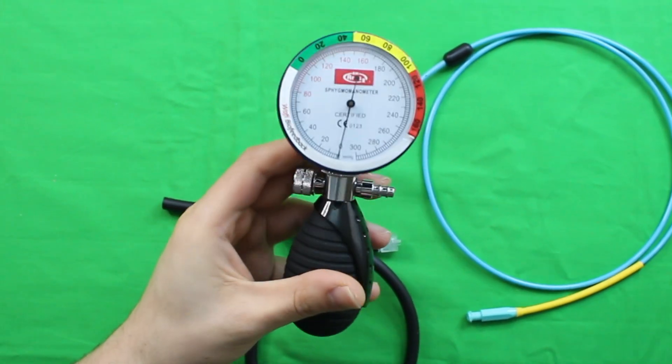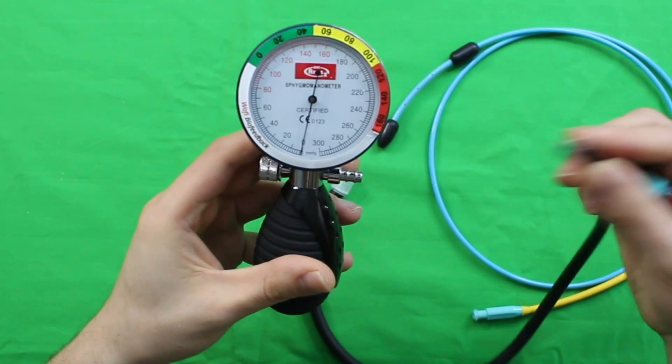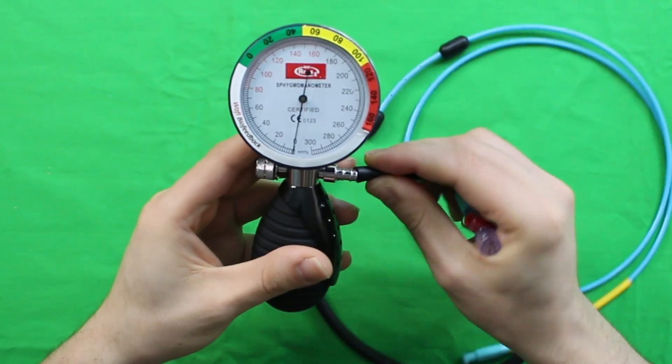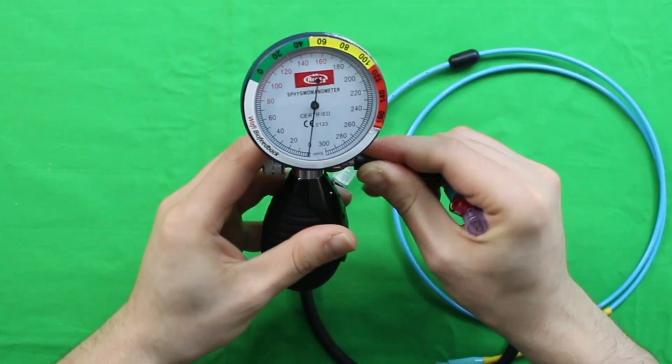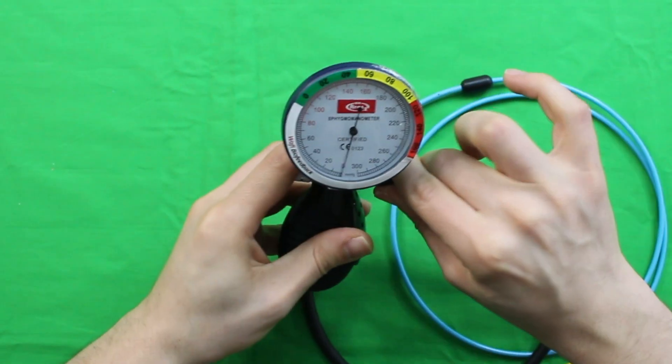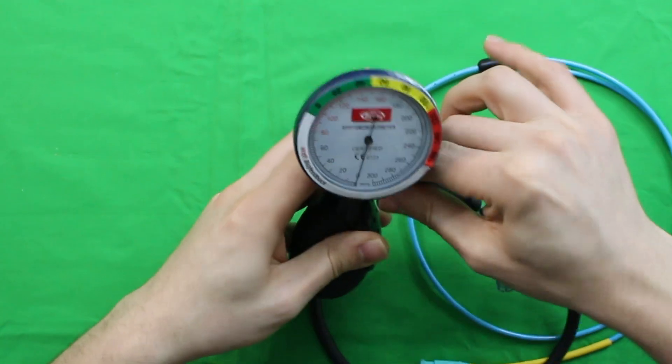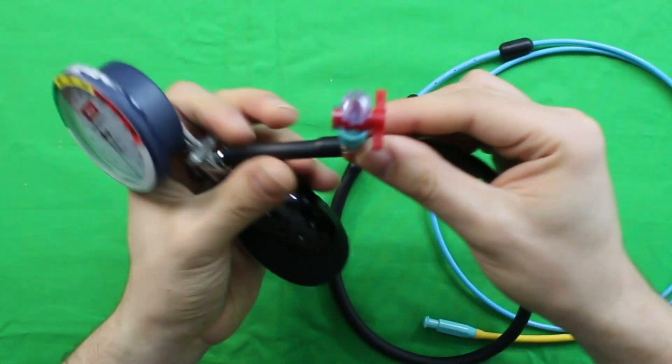Attach the pressure valve to the manometer and turn the valve on.